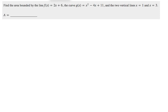Okay, in this problem we want to find the area between the line f of x equals 2x plus 6 and g of x equals this parabola, and the two vertical lines x equals 1 and x equals 3.